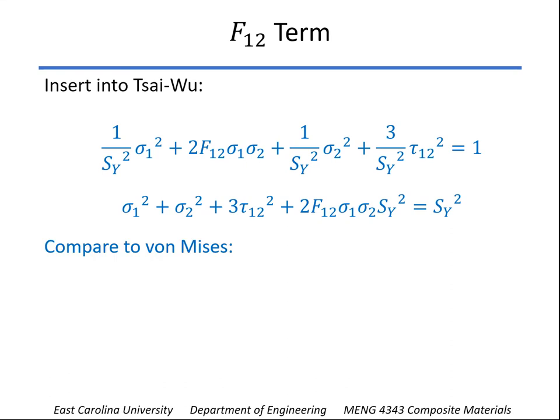Now, if you compare that to the von Mises criterion, you'll see it looks pretty similar. Sigma-1 and sigma-x, sigma-2 and sigma-y, and the shear strength shown here, and again, the yield strength will be over here on the right. So everything kind of lines up, and so if we can make this term equal to this one, then the Tsai-Wu will reduce to the von Mises criterion.